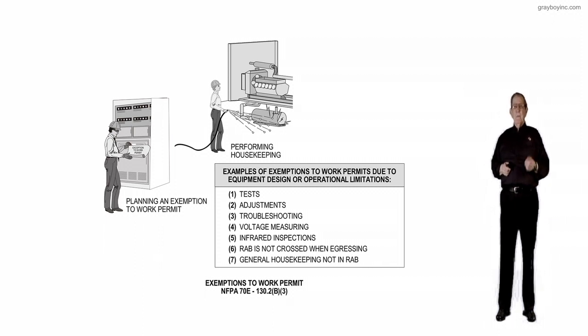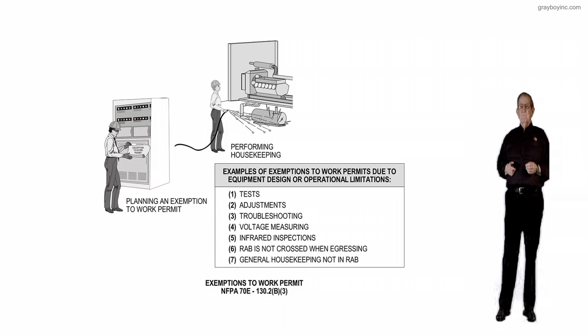Number six, the restricted approach boundary is not crossed when egressing. And seven, general housekeeping not in the restricted approach boundaries.